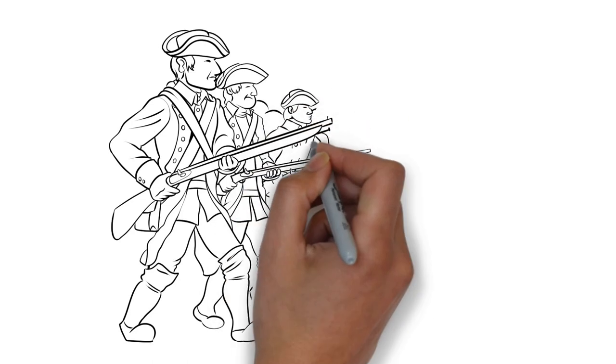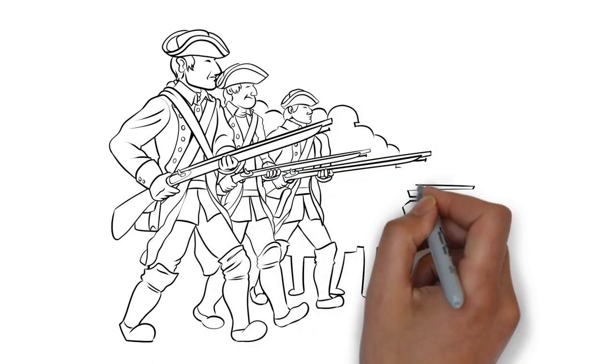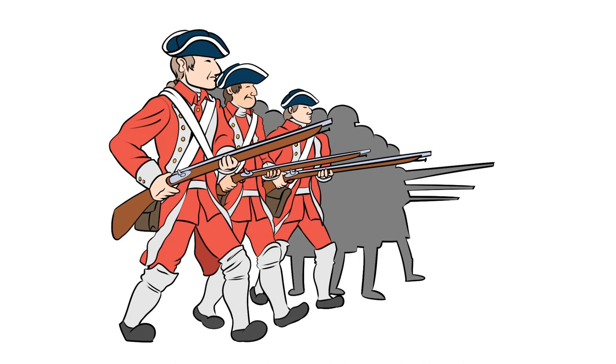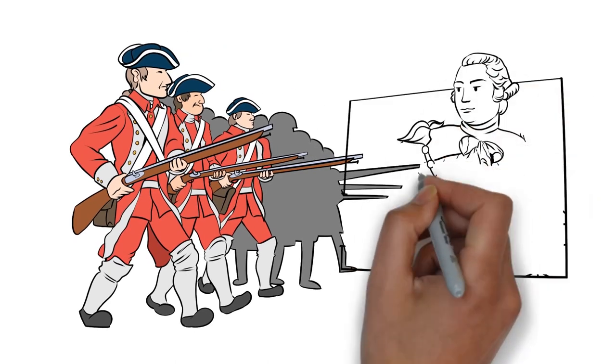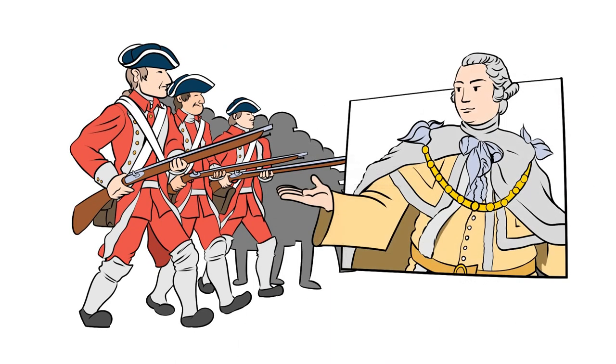After the Seven Years War ended in 1763, Britain had decided to maintain a military presence in North America. And since the army protected the colonists, Britain thought colonists should pay for it.